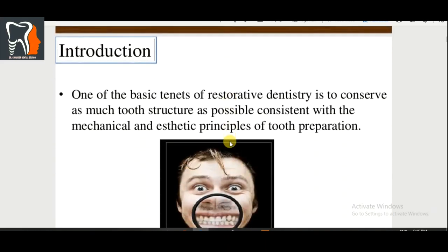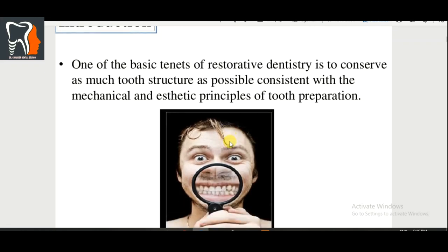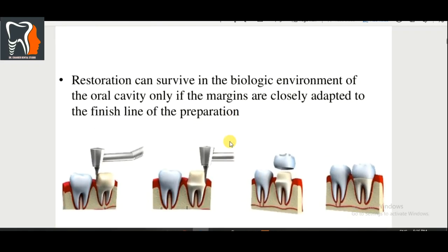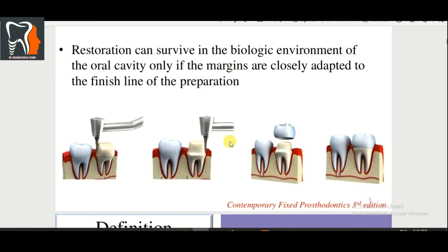Introduction: one of the basic tenets of restorative dentistry is to conserve as much tooth structure as possible, consistent with the mechanical and static principles of tooth preparation. We should not waste tooth structure when preparing a crown. A restoration can survive in the biological environment of the oral cavity only if the margins are closely adapted to the finish lines of the preparation, which is why finish lines have a very important role.